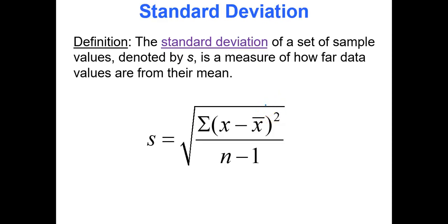The standard deviation of a set of sample values, represented by lowercase s, is a measure of how far the data values are from the mean. The larger the standard deviation, the further away on average the data values are from the mean. It's kind of like the average distance of the data values from their mean.